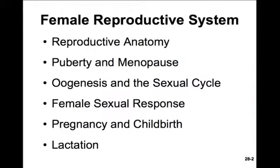In this chapter, we'll cover reproductive anatomy, puberty and menopause, oogenesis and the sexual cycle, the female sexual response, then pregnancy, childbirth, and lactation.